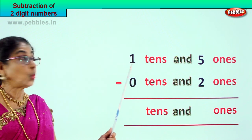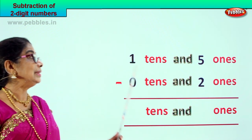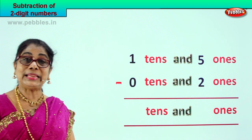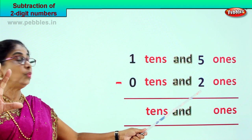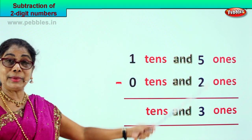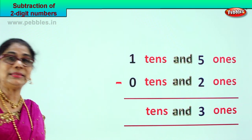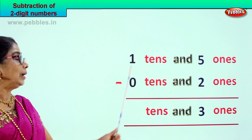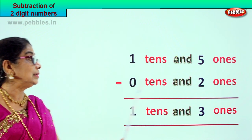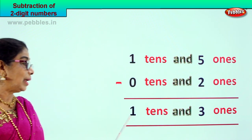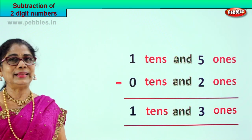Look what you have: 1 ten and 5 ones take away 0 tens and 2 ones. That is 15 take away 2. Let's do the ones first — 5 ones take away 2 ones, your answer is 3 ones. 5 minus 2 is 3. 1 ten minus 0 tens — answer is 1 ten. 1 take away 0 is 1. So 1 ten and 5 ones minus 0 tens and 2 ones gives you 1 ten and 3 ones. Did you enjoy? Good, let's take another sum.